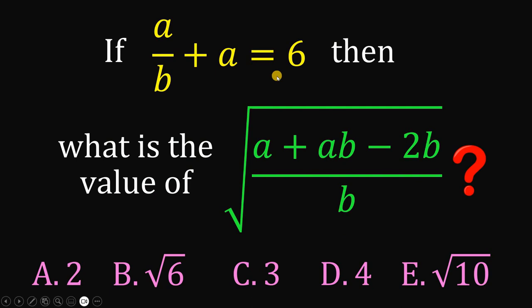If a over b plus a equals 6, then what is the value of square root of a plus ab minus 2b divided by b?